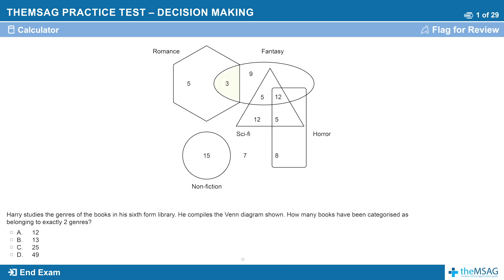For example, the three in the Venn diagram shown represents books that are both romance and fantasy. If the number is inside none of the shapes, as the number 7 is, it belongs to none of the categories given.